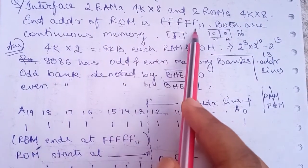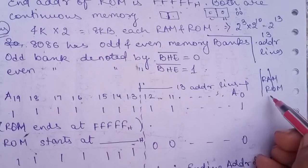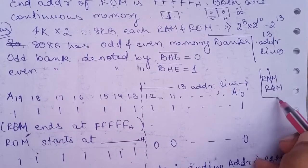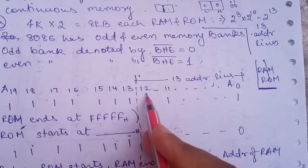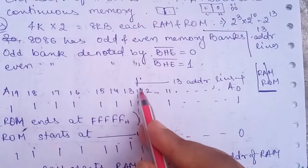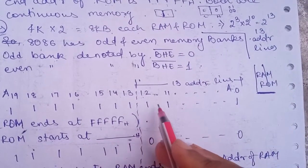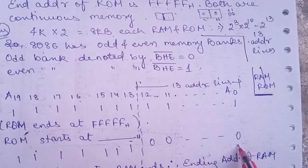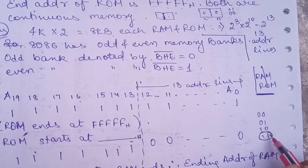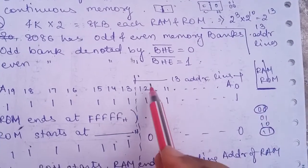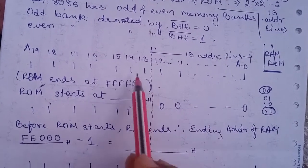The end address of the ROM has all 20 address lines as ones. We know RAM comes first, then ROM above it. Since 13 address lines are used, we separate the lower 13 lines A0 to A12. For the final address they will be all ones, and for the initial address they will be all zeros — similar to a 2-bit example: 11 is final, 00 is initial. For 13 lines, when the lower bits are all zeros the upper bits remain unchanged.